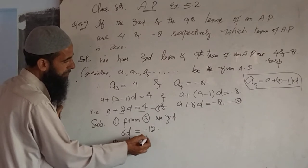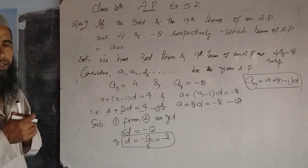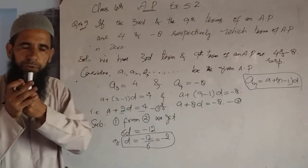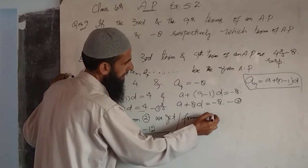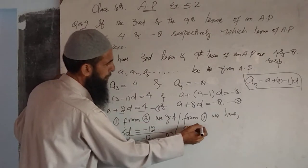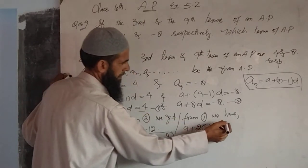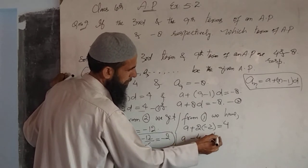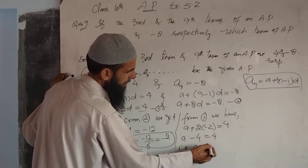Therefore d is equal to minus 2. Now substituting d = minus 2 back into the first equation: a + 2(minus 2) = 4, so a minus 4 = 4, which gives a = 8. So the first term is 8 and the common difference is minus 2.